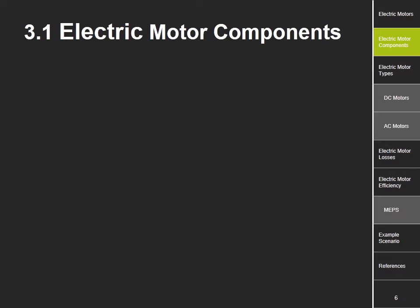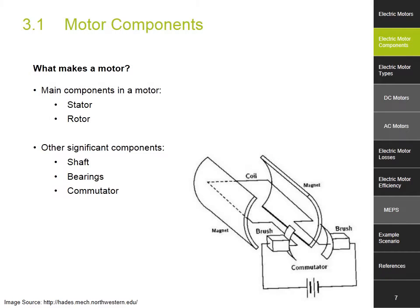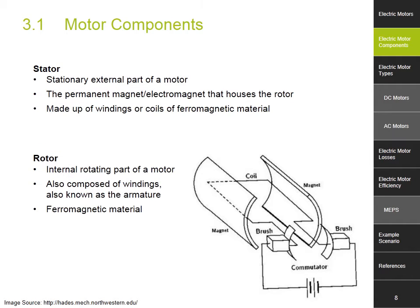Motor components. Motors have two main components: a stator and a rotor, with a number of other components such as the shaft, the bearings and the commutator. The stator is the external, stationary part of the motor. It can be considered as the permanent magnet or electromagnet that houses the rotor and is usually made out of a ferromagnetic material.